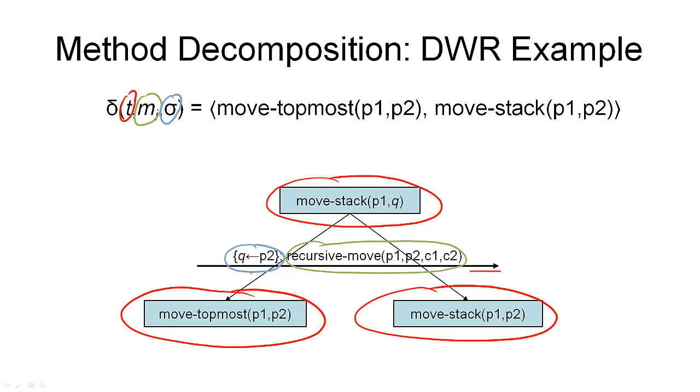And if we look at this tree, we can immediately see what the result is by looking at the leaf nodes. So this is the result of this decomposition here, namely to move the topmost container from pile P1 to pile P2, and then move the remaining stack from pile P1 to pile P2.